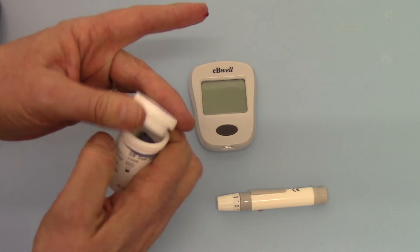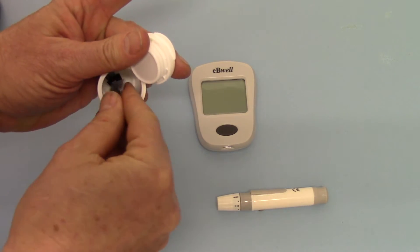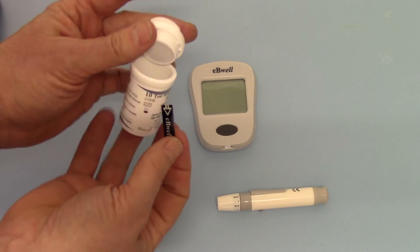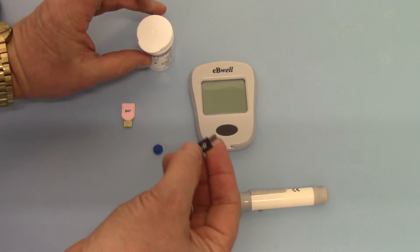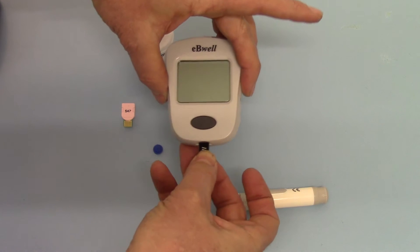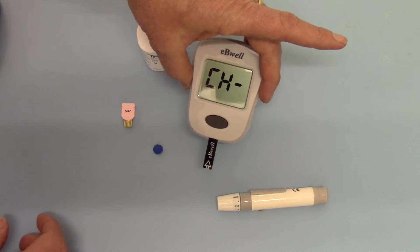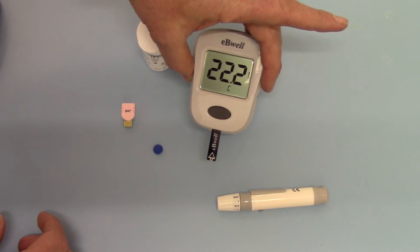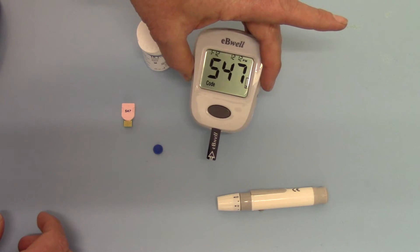So let's take a test strip out. Here we have one of the Ebewell test strips. This inserts into the base of the meter which will power up and show the temperature and the test batch code chip number.